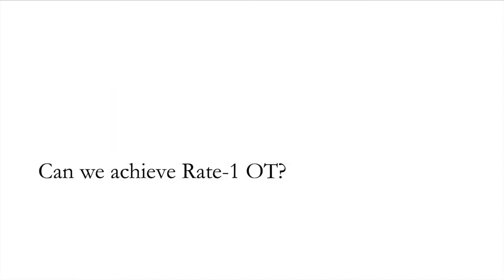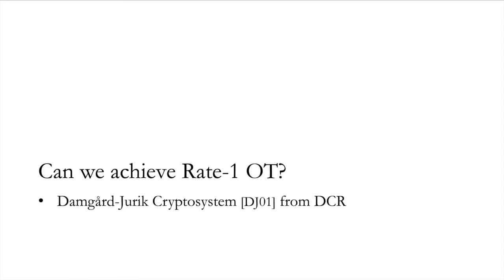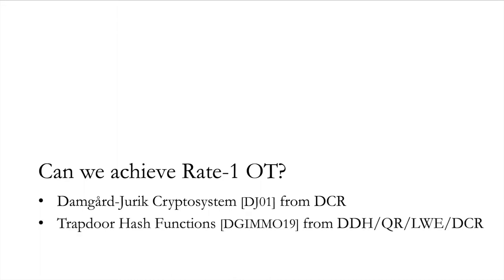The next question is: can we actually achieve Rate-1 OT? The answer is yes. The Damgård–Jurik cryptosystem gives a Rate-1 OT from the DCR assumption, and recent work by Dottling et al. in 2019 constructed Rate-1 OT from trapdoor hash functions, which can be realized from various assumptions including DDH, QR, LWE, and DCR.